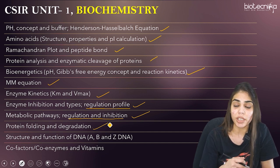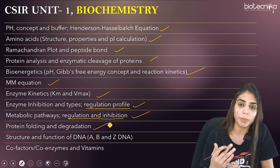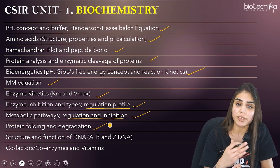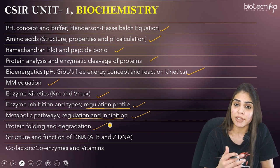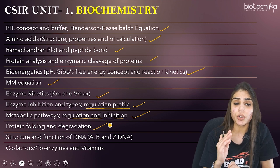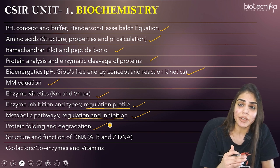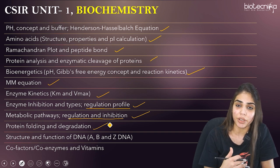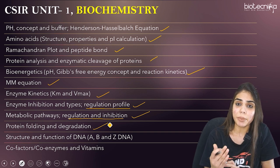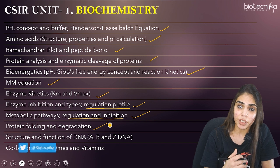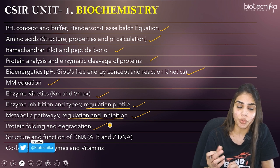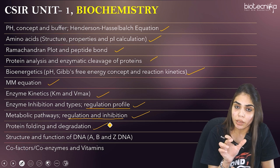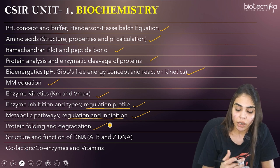The next topic is structure and function of DNA. They often give a four-option question asking about the differences between A, B, and Z structures of DNA. You should know anti-conformation, syn-conformation, the residues present in all three types of DNA, what the major and minor grooves are, whether they are wide and narrow or flat. You should know everything about A, B, and Z DNA conformations.